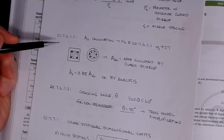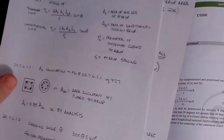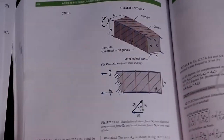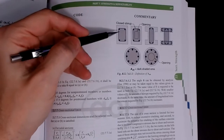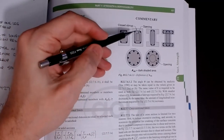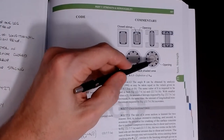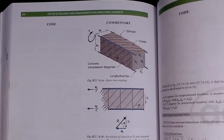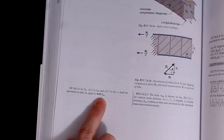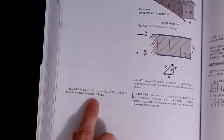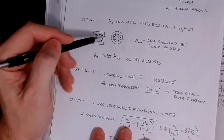Section 22.7.6.1 addresses how to calculate A_o. For that they refer you to a figure: A_oh is the shaded area including any opening. For hollow sections you don't subtract the opening from A_oh. The code says you can either calculate A_o by analysis or simply take it as 0.85 × A_oh, which is what we normally do for rectangular and circular shapes.